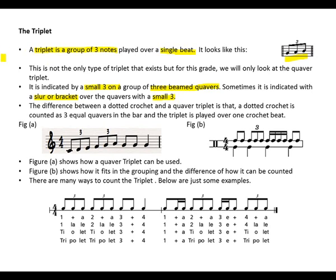The difference between a dotted crotchet and a quaver triplet, remember the dotted crotchet, we may divide it into three quavers, is that a dotted crotchet is counted as three equal quavers in a bar. And then the triplet is played over one crotchet beat.